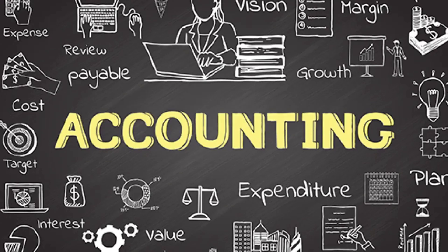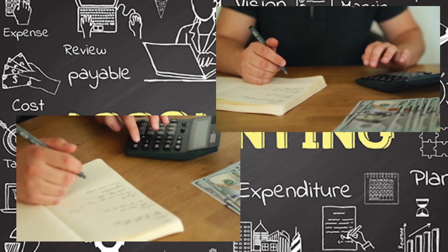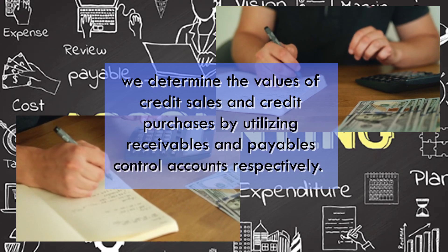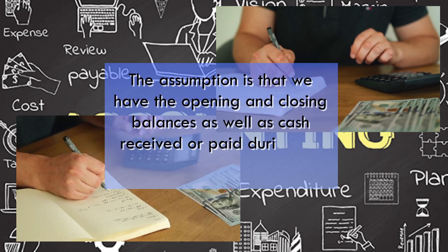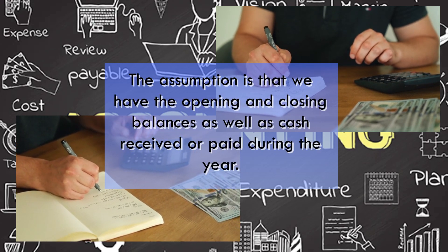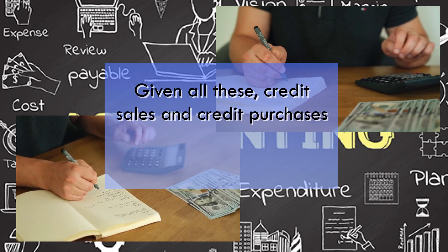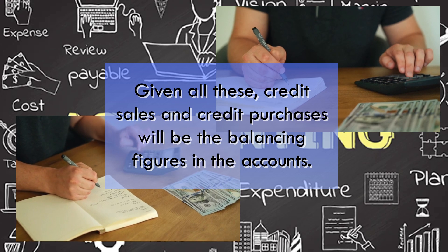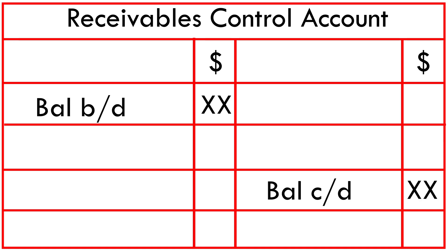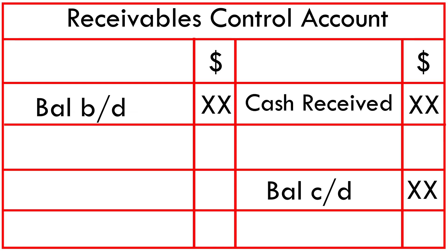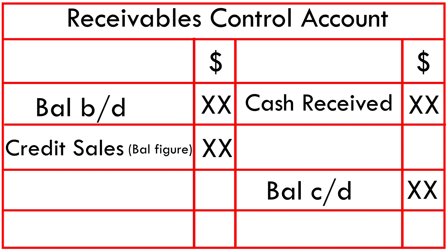The second method is control accounts. In this method, we determine the values of credit sales and credit purchases by utilizing receivables and payables control accounts respectively. The assumption is that we have opening and closing balances as well as cash received or paid during the year. Given all these, credit sales and credit purchases will basically be the balancing figure in the accounts. As you can see in my receivables control account, I have the balance brought down and the balance carried down, and cash received during the year. To get the credit sales figure, simply take the totals on the credit side minus the total on the debit side.